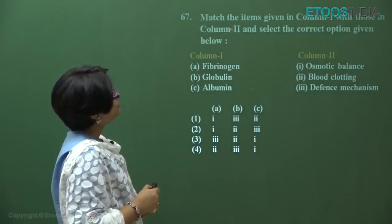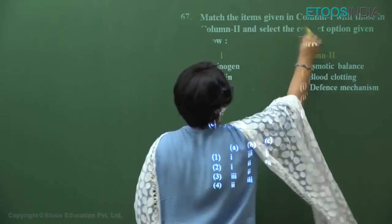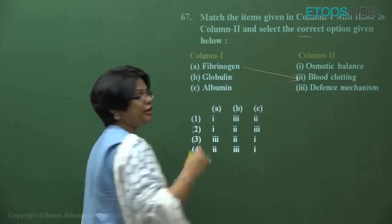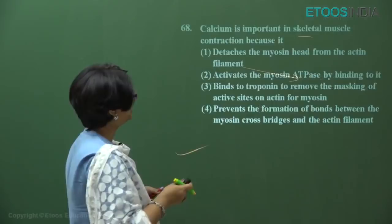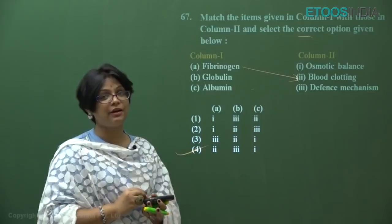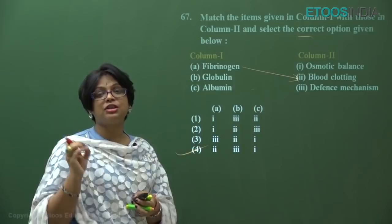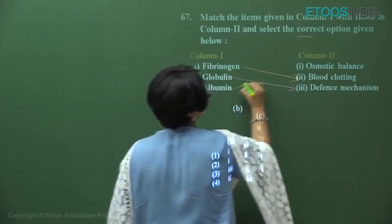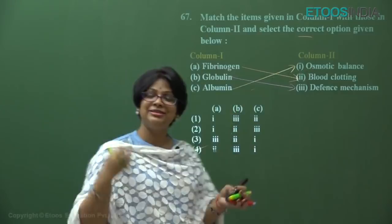Question number 67: match plasma proteins. Fibrinogen and prothrombin are both involved in blood clotting — A is two. Globulins (especially gamma globulin/immunoglobulins, which are antibodies) are involved in body defense — B is three. Albumin is the main plasma protein that maintains osmotic balance — C is one. Checking: A is two, B is three, C is one — answer is option number four.